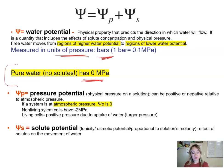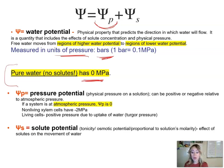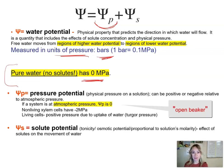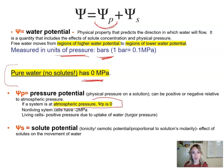Another factor influencing water flow is pressure potential — this is the physical pressure on a solution, and it can be positive or negative. One important thing to keep in mind: when you have a scenario involving an open beaker container, that container with the solution is subject to atmospheric pressure, so the pressure potential will always be zero in that case.